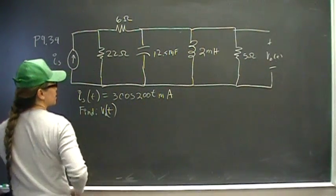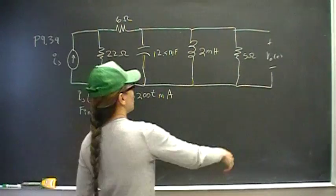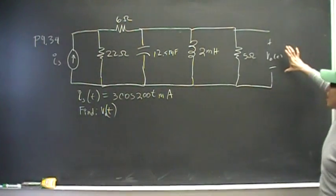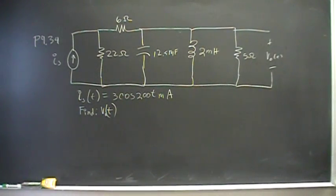We know that the current is 3 cosine 200t milliamps and we want to find the voltage at this end here.